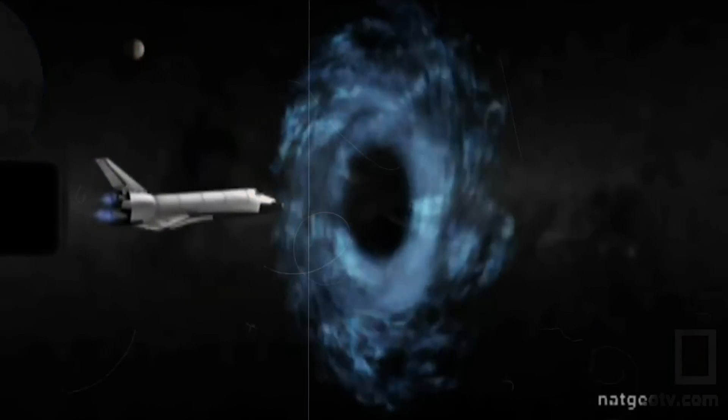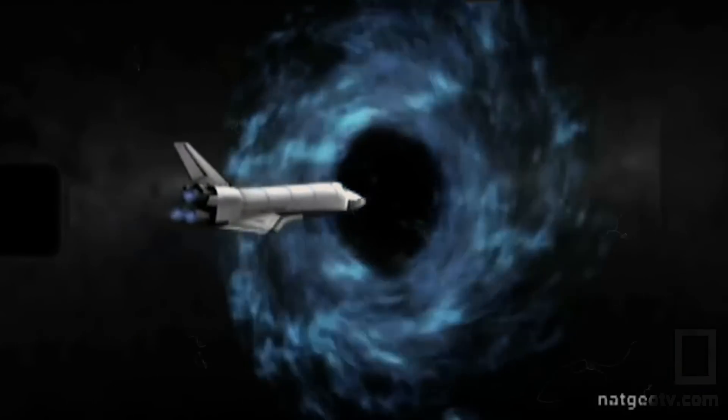A wormhole is basically a thin tube of space that connects two very distant parts of space. It's almost like a tunnel - a little part of space where you go in there and pop out somewhere else in the universe.